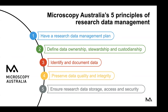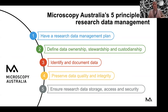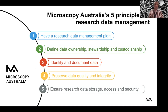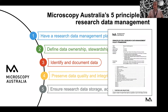Those five principles, considering the code, the guide associated with the code, and the FAIR data principles, are quite logical. The first principle is: have a research data management plan. Second, define who is the data owner, the data steward, and other data custodians in your facility, university, or organization. Third, identify and document data. Fourth, preserve data quality and integrity. And fifth, ensure that your data has proper storage, access, and security. If you want more detail about this framework, you can contact me and I will share the policy framework that we have worked on.